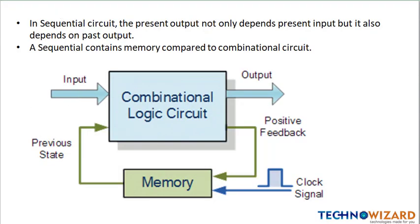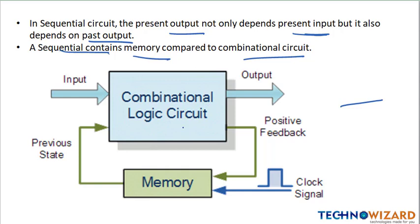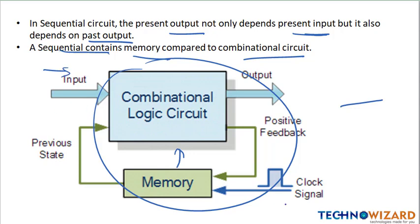In a sequential circuit, the present output not only depends upon the present input but also depends upon the past output. That is, it has memory — sequential circuits contain memory, compared to a combinational circuit. Combinational circuits are made up of logic gates but don't have memory. If we add memory to a combinational circuit, it becomes a sequential circuit. A clock signal is provided, and positive feedback is given from the output.